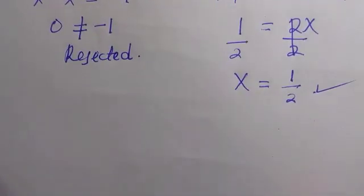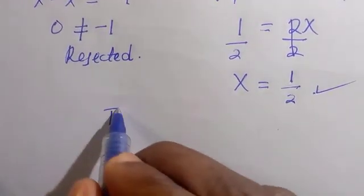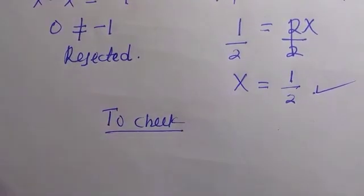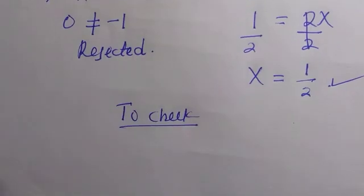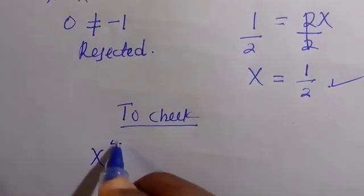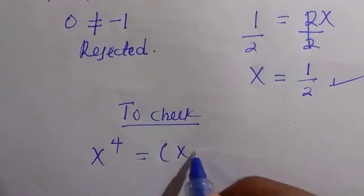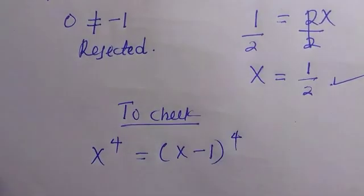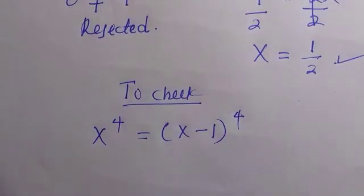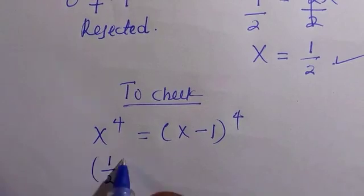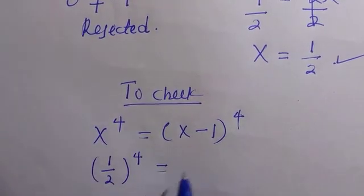We should find the real value of x. To check if x equals 1 over 2 satisfies the problem, we substitute it as x to the power of 4 equals (x minus 1) raised to the power of 4. By plugging the value x equals 1 over 2, we have (1 over 2) raised to the power of 4 equals...